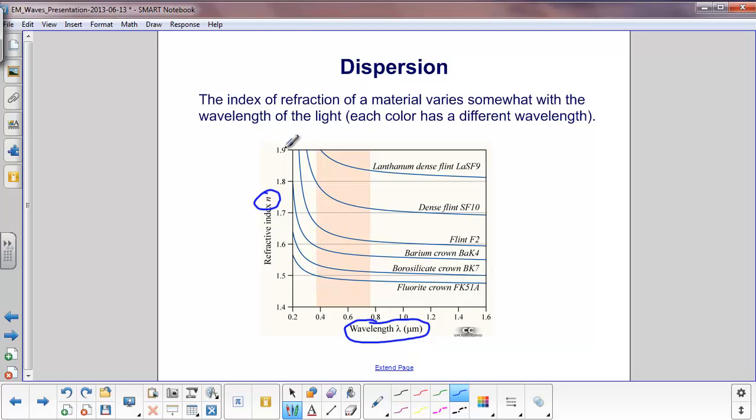Now, it has more of an impact. Look at here, Flint goes straight, then it peaks up. Lanthanum down here, it probably peaks somewhere up here. So the smaller the wavelength, the greater refractive index.